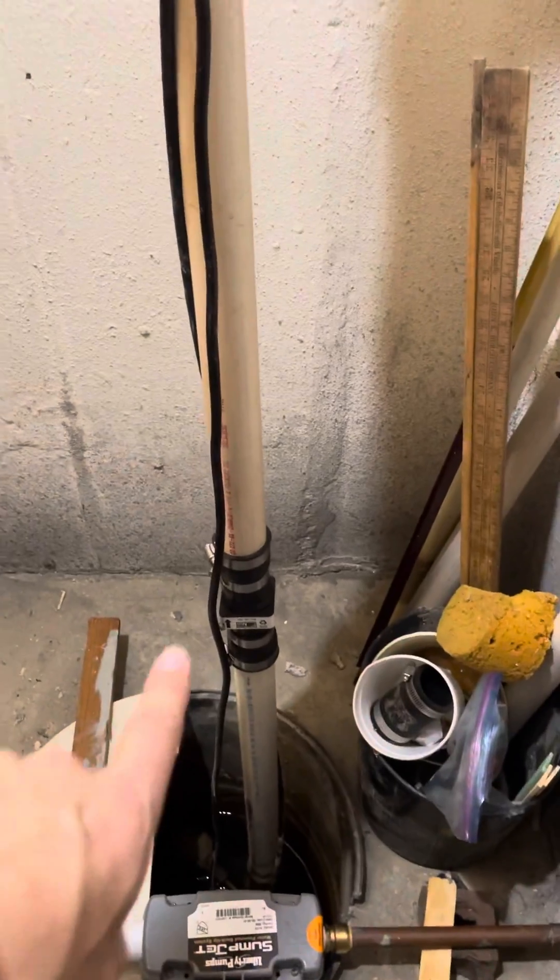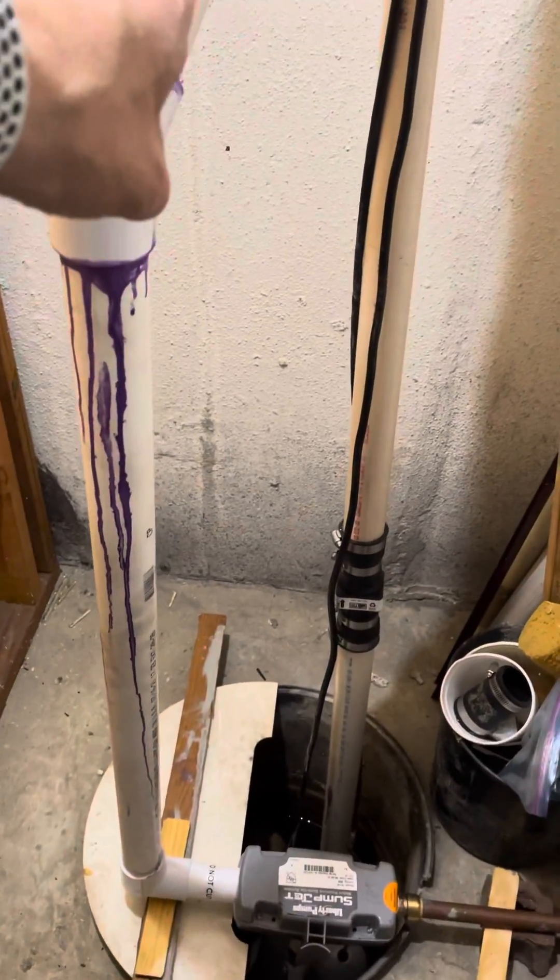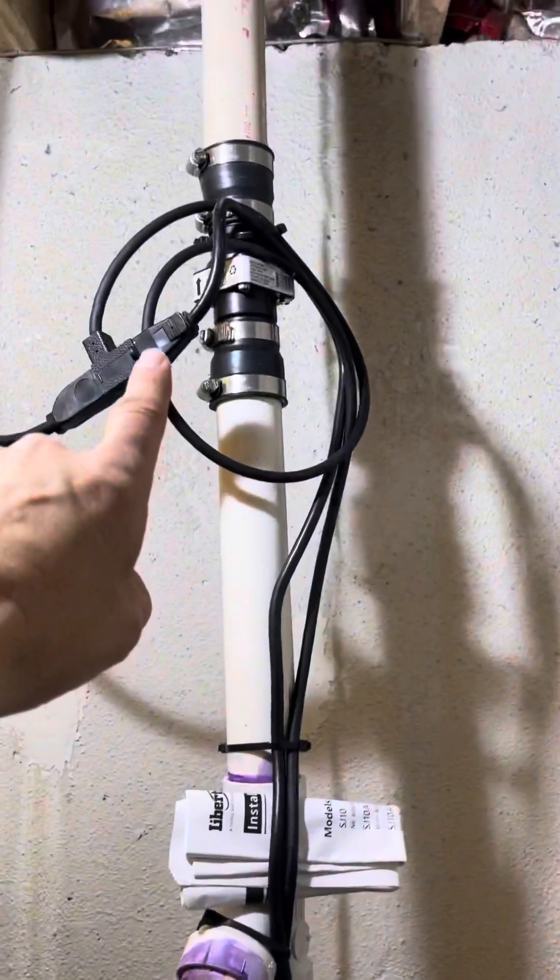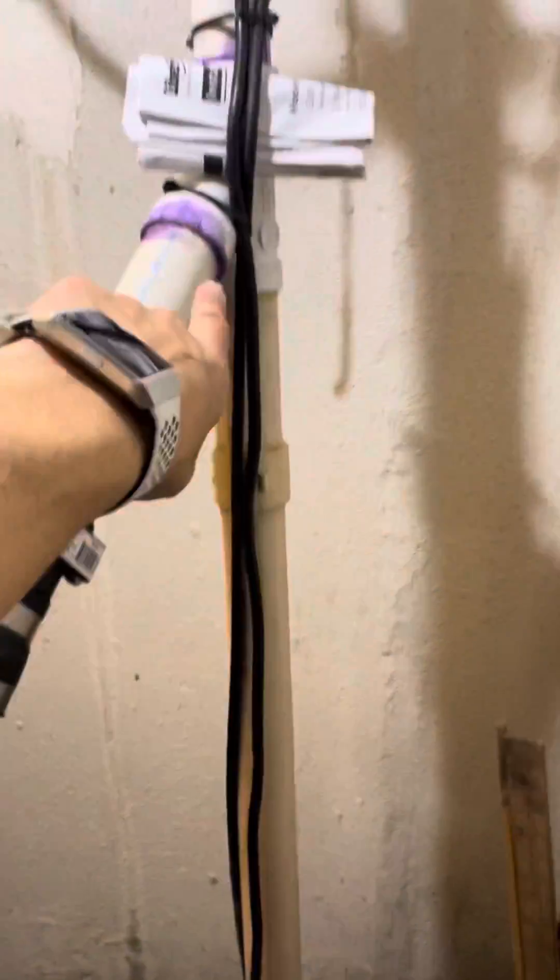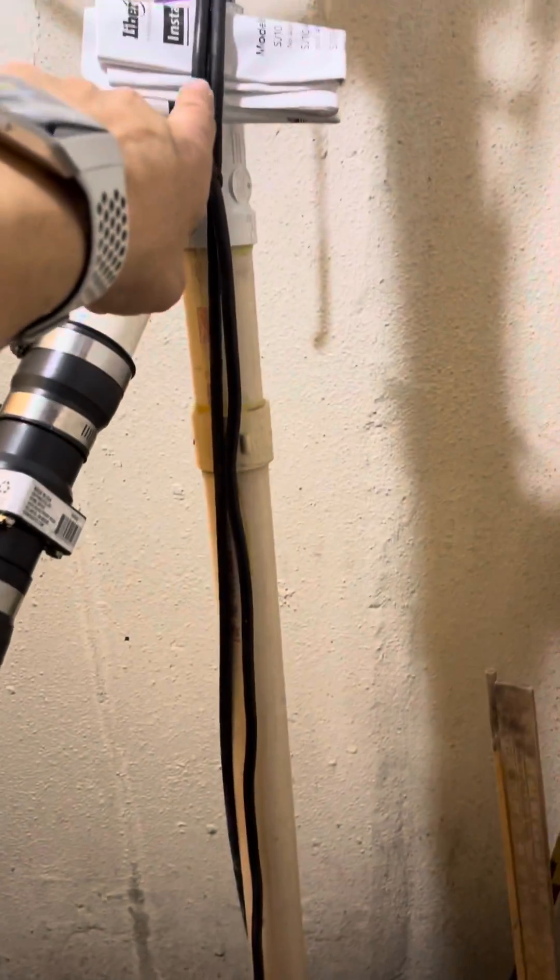So I got one there from the regular sump, one from the backup water powered pump, and then I got one here that's going out. It's fairly easy to do.